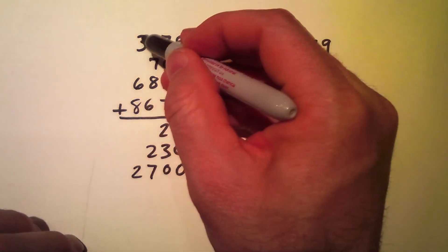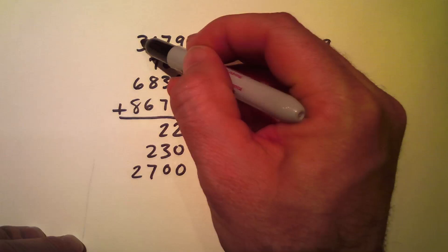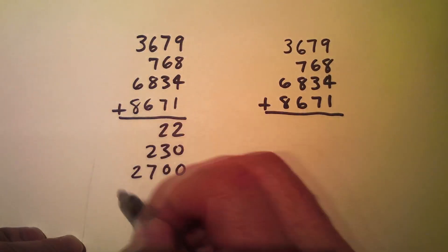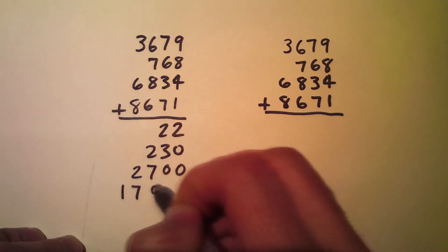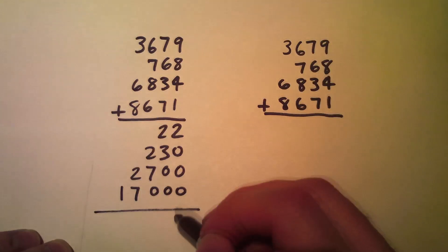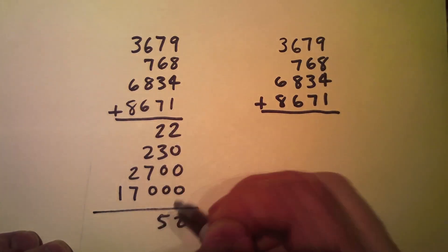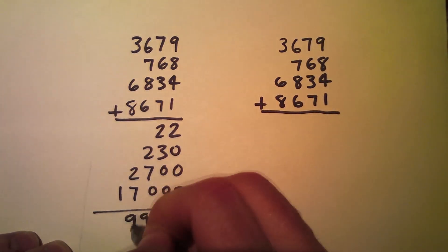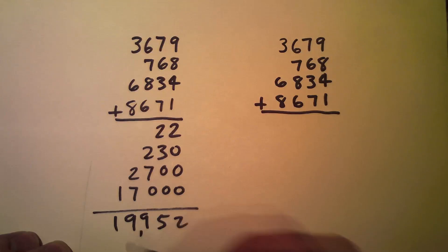And then I'm finally going to add my thousands. 3 and 6 is 9, and 9 and 8 is 17, so 17,000. I'm going to add these up. So 2, 5, 9, 9, 1. So 19,952.